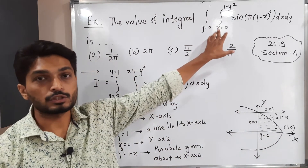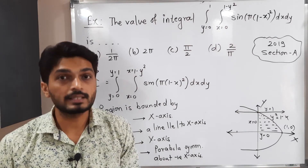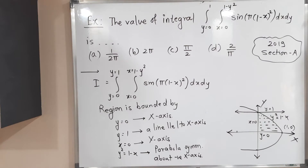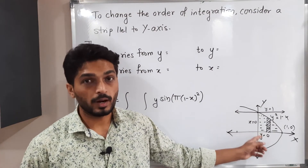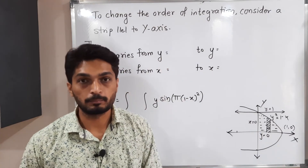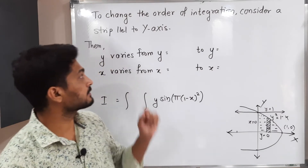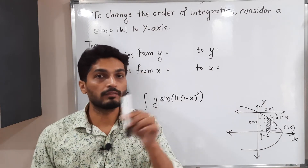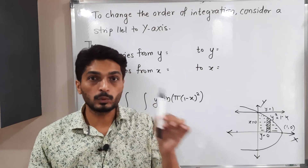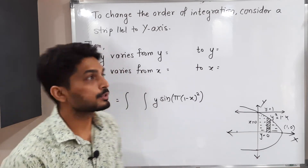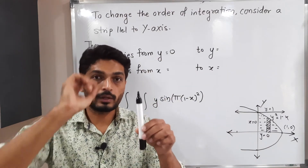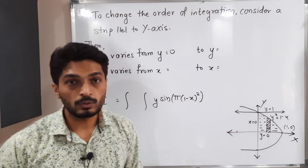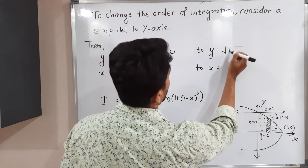In the given problem, the inner integration is with respect to X, meaning the given strip is parallel to the X-axis. To change the order of integration, I will consider a strip parallel to the Y-axis. Since we have changed the order, the inner integration will now be with respect to Y. Our approach is: identify what bounds the strip below, above, and from left to right. The strip is bounded below by Y = 0 and above by the part of the parabola, so Y goes from 0 to √(1 − X).